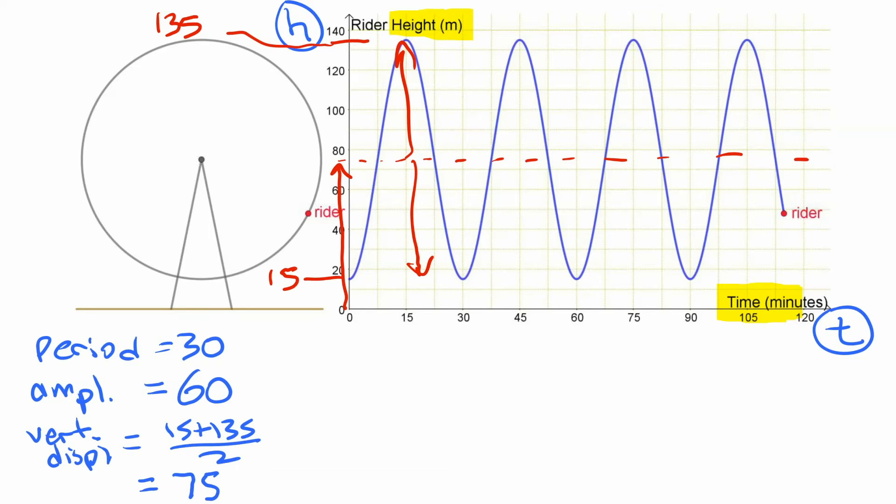And the last thing we have to determine is if there's any kind of horizontal shift here. Now to do that, we have to decide what base function we're using. Now the best base function here is one where we can actually use one that is not going to involve a horizontal shift at all. Since we start at the bottom here, at a low point, we can use cosine with a vertical reflection. Or in other words, we can use negative cosine as our base function here because we start at a low point.